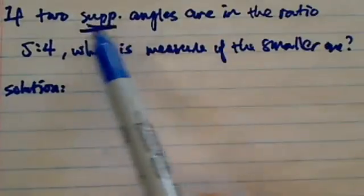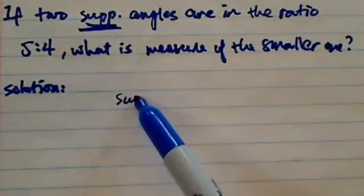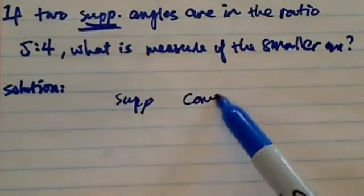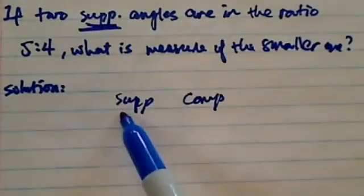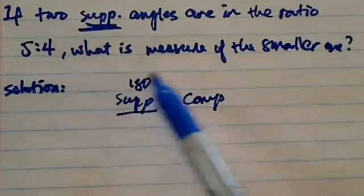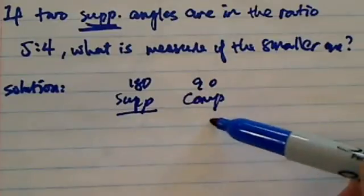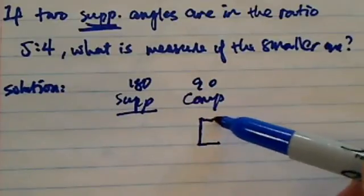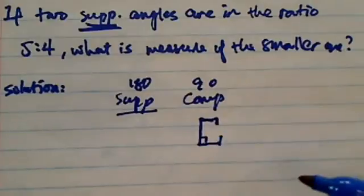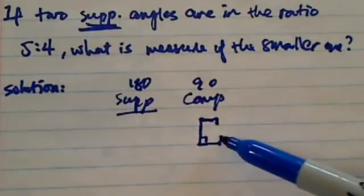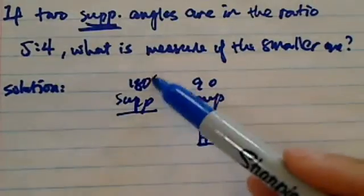Now the trick is the supplementary angle. Supplementary angle and complementary angles are really confusing which one is which. Of course, one is 180 and one is 90. And the easier way I find for my students is think of C as a 90 degree, right? It has 90 degrees, and then if you know C complementary is 90, of course the other one is 180.